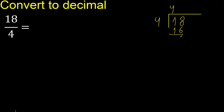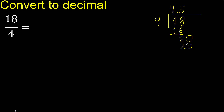18 minus 16 is 2. There is no next digit, so we continue with a decimal — put the decimal point here, ok? Bring down 0 to get 20. 4 multiplied by 5 is 20. 20 minus 20 is 0. Therefore, finish.